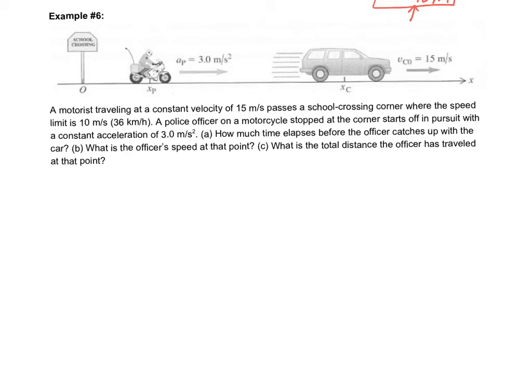Let's go through example number six from our student note packet. This is a kinematics question dealing with a motorcycle and a car. A motorist is traveling with a constant velocity and passes a policeman, who is on a motorcycle and is going to start off in pursuit.